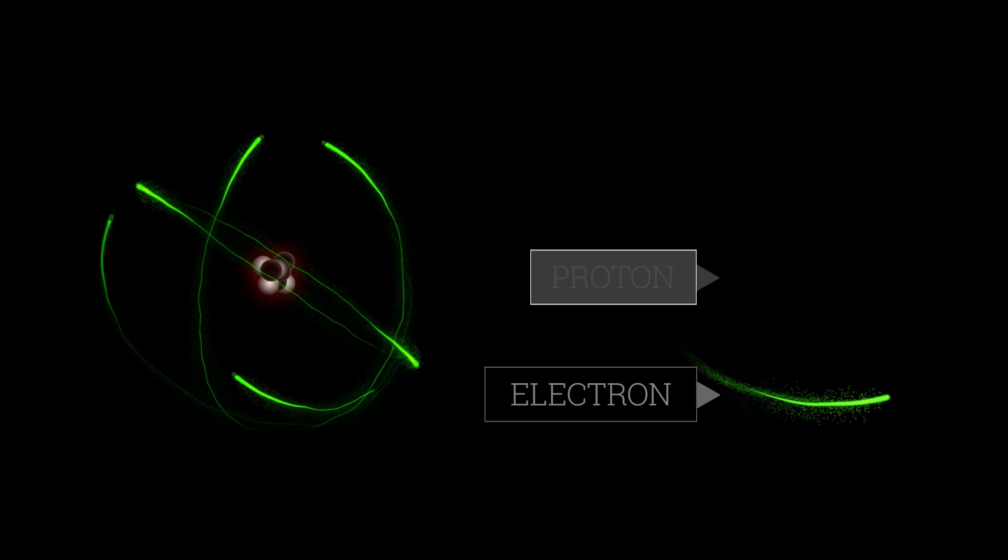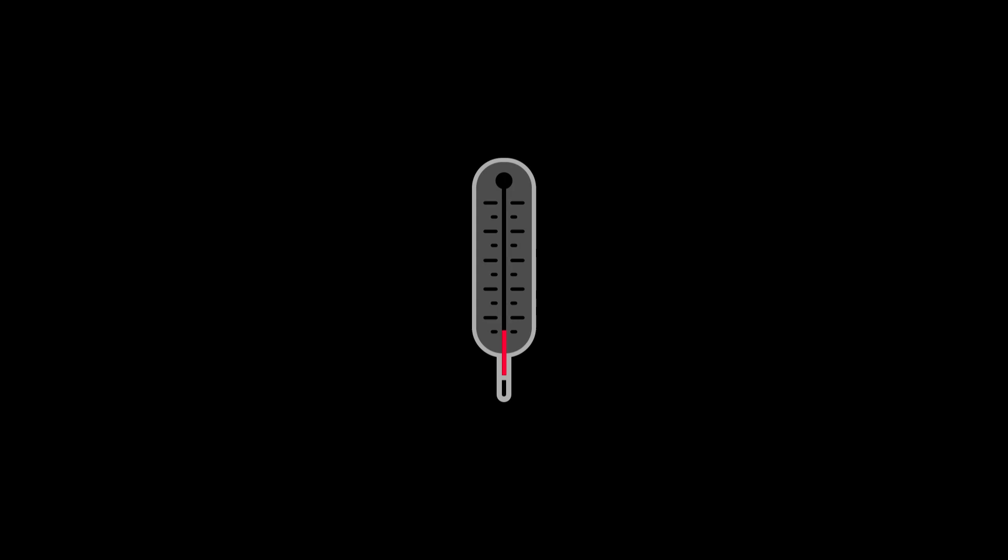Temperature is a measure of how fast particles of matter move around. When things are hot, particles zip around quickly. When it's cold, they wander slowly.